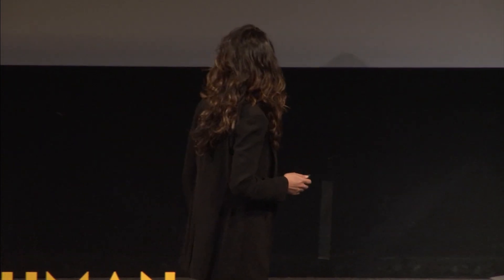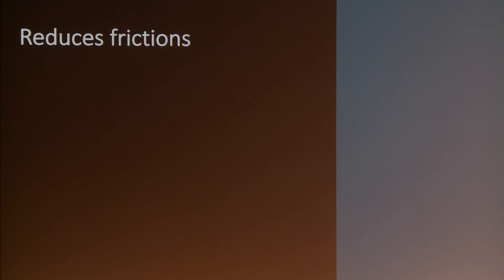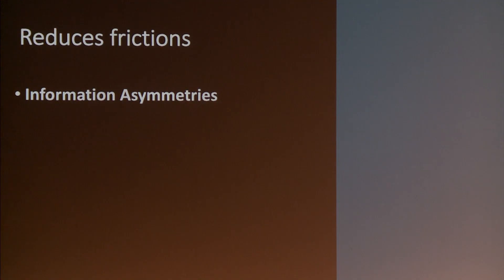The entire debate and discussion is essentially about how can we make these systems better. What technology can do — and this goes back to 200 years of literature in economics — is, first of all, reduce a lot of frictions. What are those frictions? Well, first of all, information asymmetries: party A knows something and party B does not, and there is a trusted third party required to bridge this gap.